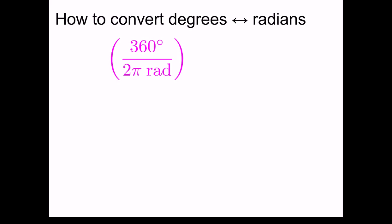Now, this can be simplified algebraically to be 180 degrees per π radians, which we can then use as a conversion factor like any other.